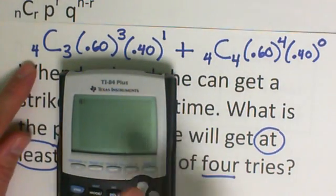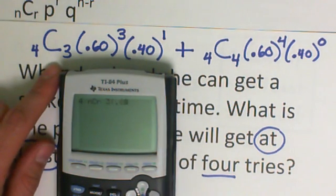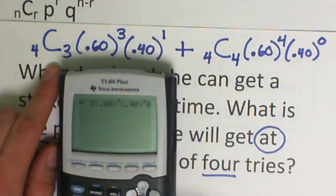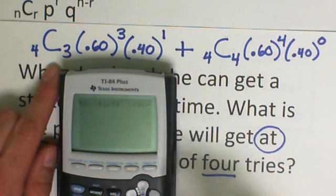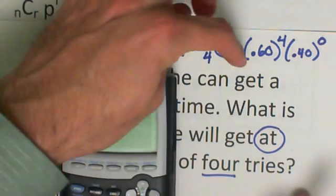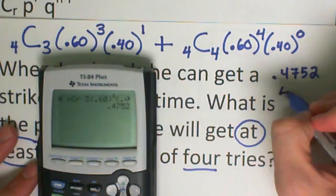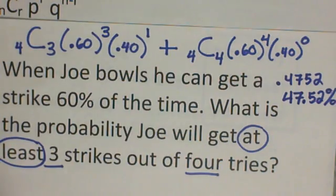When I type it in, I start with the four, math over to probability, down to the C, put in the second number, parentheses 0.60 raised to the third, parentheses 0.40 raised to the first, which you don't necessarily have to type in the first there, plus do the next four, math over to probability, NCR, choose the four, then the 0.60 raised to the fourth, and the 0.40 raised to the zero, and enter. This is the probability that it could be three out of four or four out of four, and that is 0.4752, or if we change that to a percent, that is 47.52% chance, so a little less than half a chance of that happening.